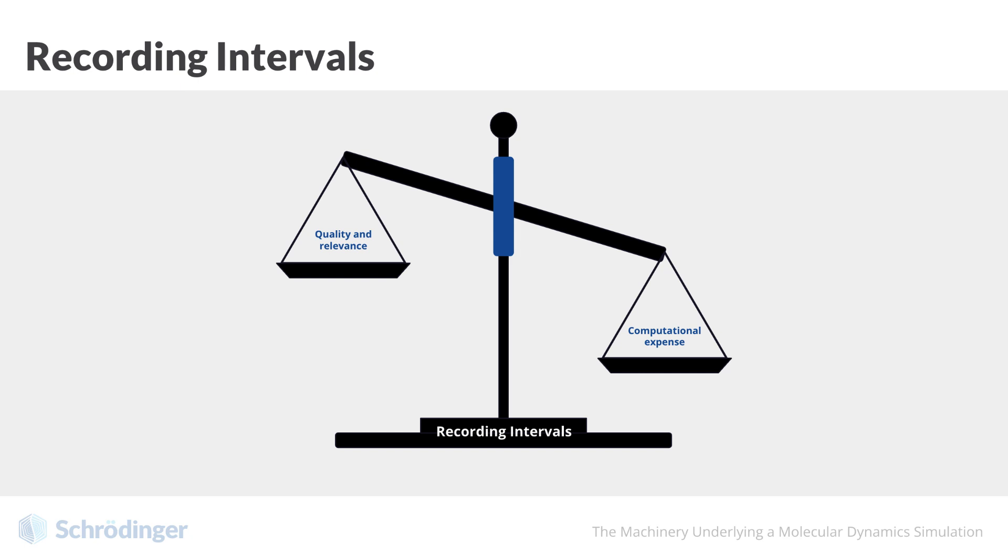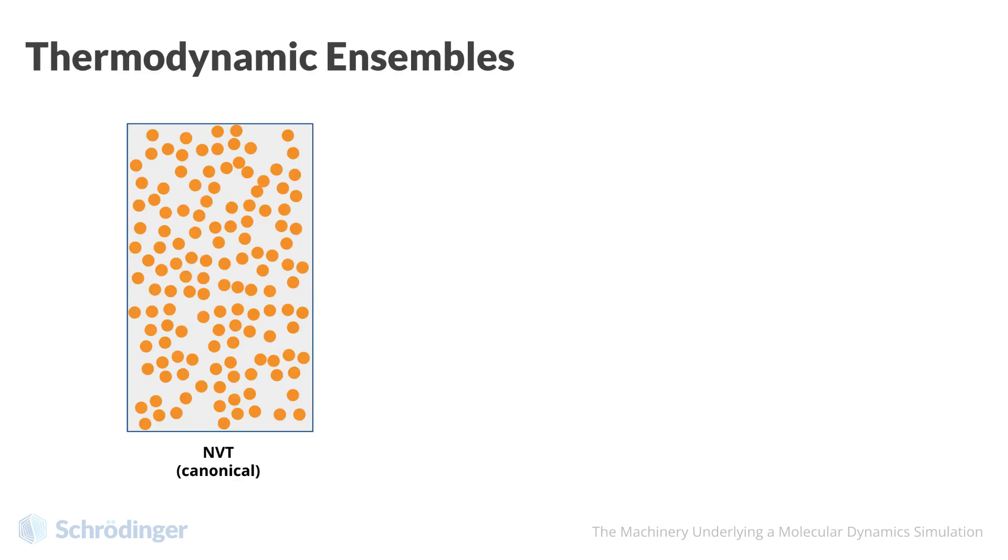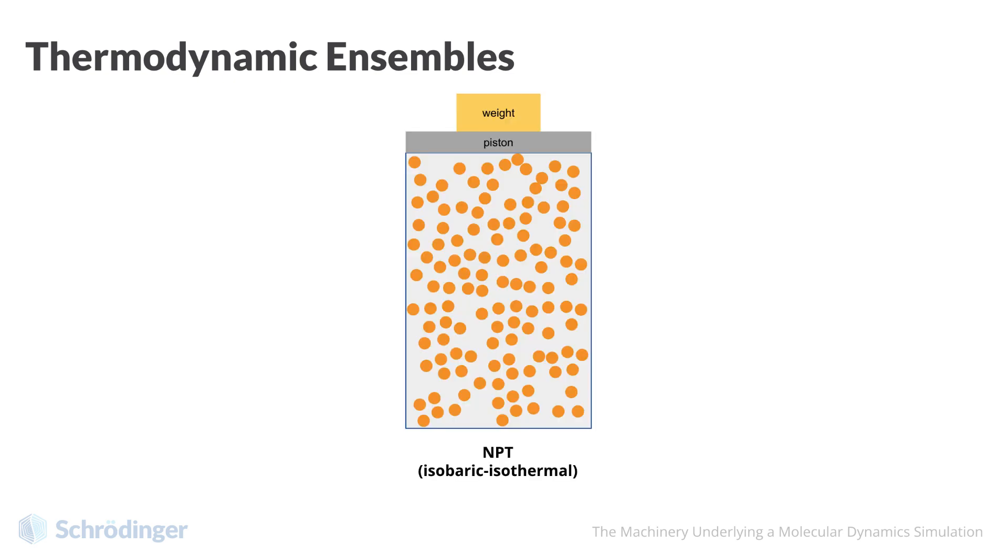Another essential parameter for performing MD simulation is the thermodynamic ensemble. These relate to the thermodynamic potentials that we may be familiar with, such as isothermal and isobaric. The most common ensembles we will use are constant number of particles, constant volume, constant temperature—NVT—or constant number of particles, constant pressure, constant temperature—NPT.